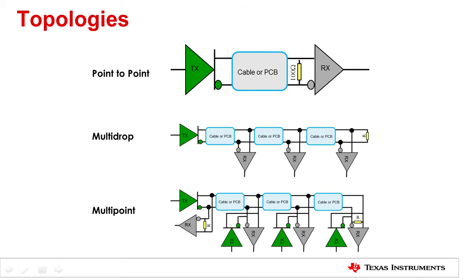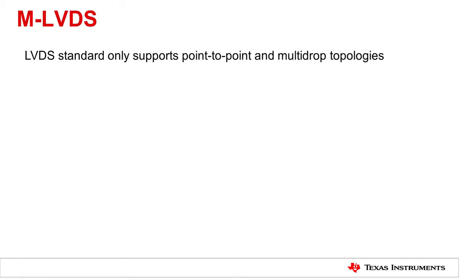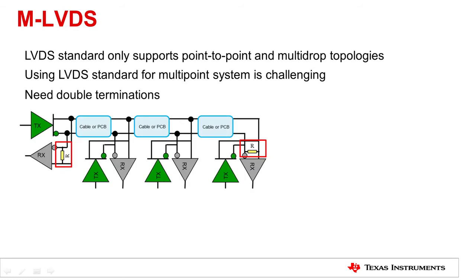LVDS technology initially could only support point-to-point applications, and later the standard was revised to support multi-drop application. However, multi-point application is still not supported by LVDS standard. Multi-point application introduces a new set of problems. For example, the main transmission line needs to be double terminated in multi-point system, whereas LVDS drivers are specified for driving a 100 ohm load. In multi-point system, using a 100 ohm transmission media, the load appears as 50 ohm or even lower. With typical LVDS drive strength, 350 millivolt swing cannot be guaranteed.